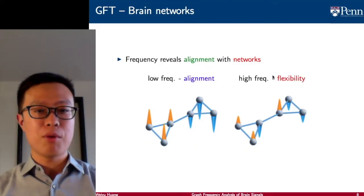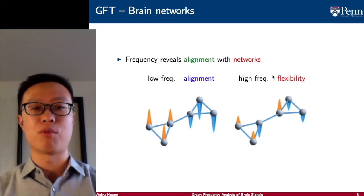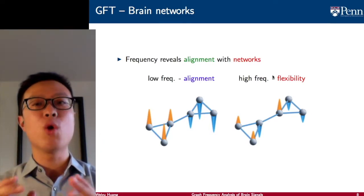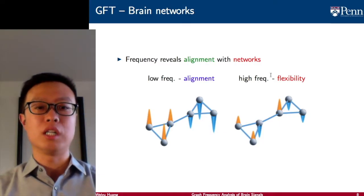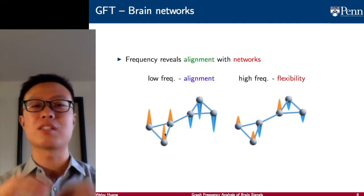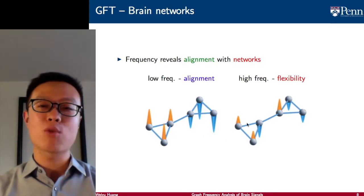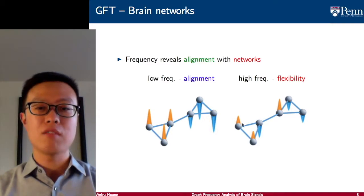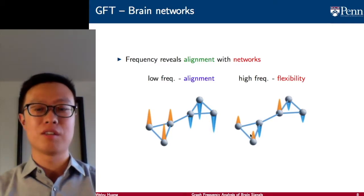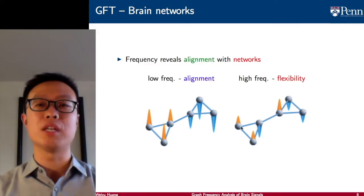For example, if our brain has two modules, one at lower left and the other at upper right, if we look at a low frequency component in the GFT, then it can be considered as a signal that is highly aligned on the network. If we examine the high graph frequency component, then it is highly misaligned — it is highly flexible, meaning that nodes that are highly connected can still have very different signals in the GFT domain.